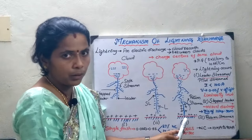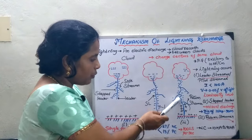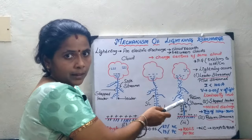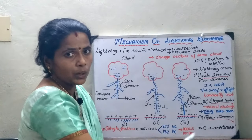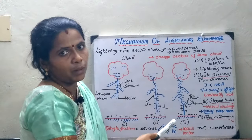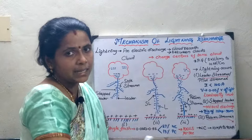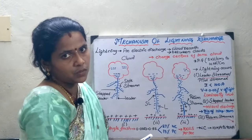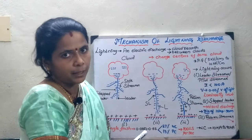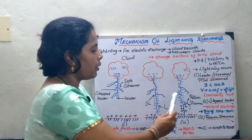In the third case, the leader streamer reaches the ground. The negative charges are neutralized by the induced positive charges on the earth, producing a return streamer of opposite polarity — a positively charged return streamer that ionizes the remaining negative charges. Only when the streamer reaches the ground does lightning actually occur. This completes the three cases: pilot streamer, step leader, and return streamer.